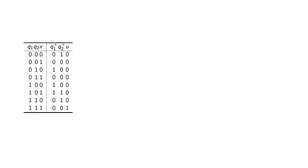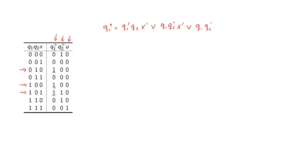Now that we have our truth table we can write our Boolean functions. There are three Boolean functions we need to define: one for Q1-plus, one for Q2-plus, and one for U. We will look at the ones in the truth table and write the expression based on that. Q1-plus will be a one for the row giving Q1-prime · Q2 · X-prime, or the row giving Q1 · Q2-prime · X-prime, and one more row giving Q1 · Q2-prime · X.